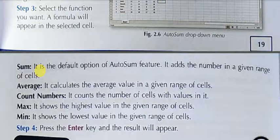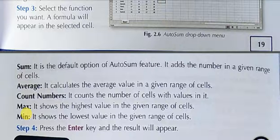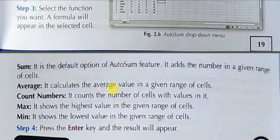In AutoSum, these are the options: sum, average, count, max, and min. Sum is used to add numbers. Average is used to calculate the average of the given range. Count is used to count the number of cells with values.